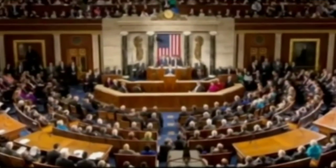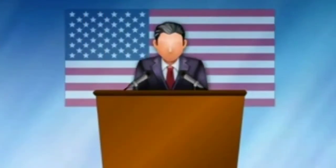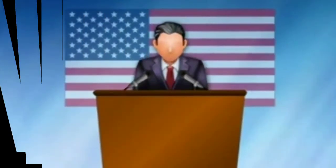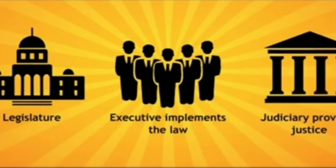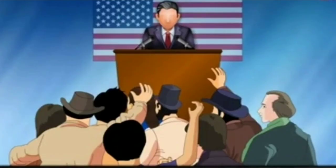Now we will see the presidential system of government. The presidential system can be said to be another important system of government. This type of system exists in countries such as the United States of America. This system is different from the parliamentary form. In this system, the president is the executive and is independent of the legislature. As the head of state, the president is directly elected by the people.